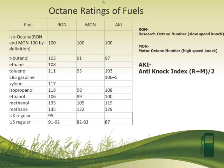You can also see that there are three numbers. The research octane number, the motor octane number, and the anti-knock index. The research octane number is a measure of slow speed knock, or a test when the engine is not under load. The motor octane number is a test of high speed knock, or when the engine is under load. And then finally the anti-knock index, which is the average of the RON plus the MON divided by 2. That anti-knock index is important because it is the number listed as the octane rating on our gas pumps here in the United States.